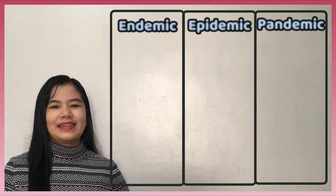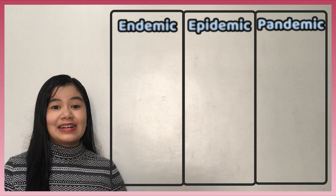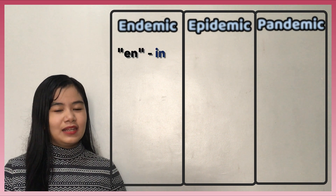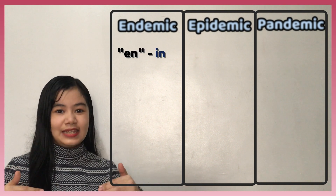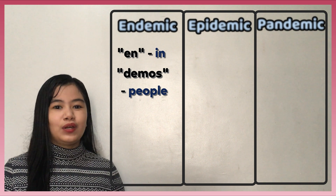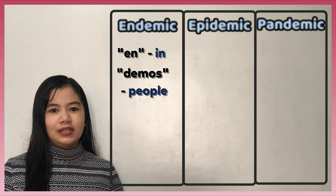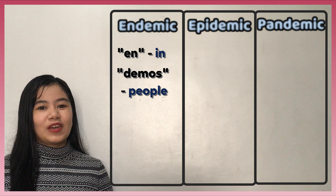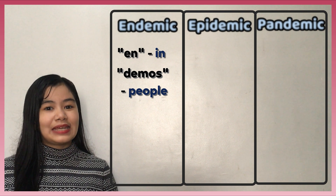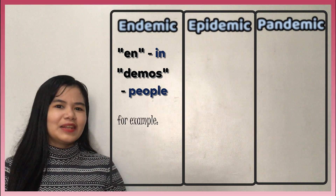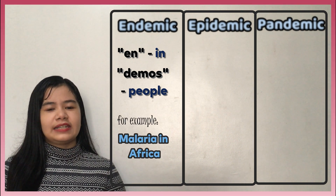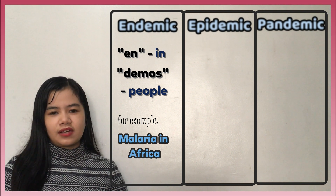Let's start with endemic. Ang salitang endemic ay mula sa Greek words na 'em,' meaning 'in' o 'loob,' at 'demos,' meaning 'people' o 'tao.' Ang endemic ay isang infectious case na pambalagi ang makikita sa isang lugar. Halimbawa, ang malaria ay endemic sa ilang parts ng Africa.